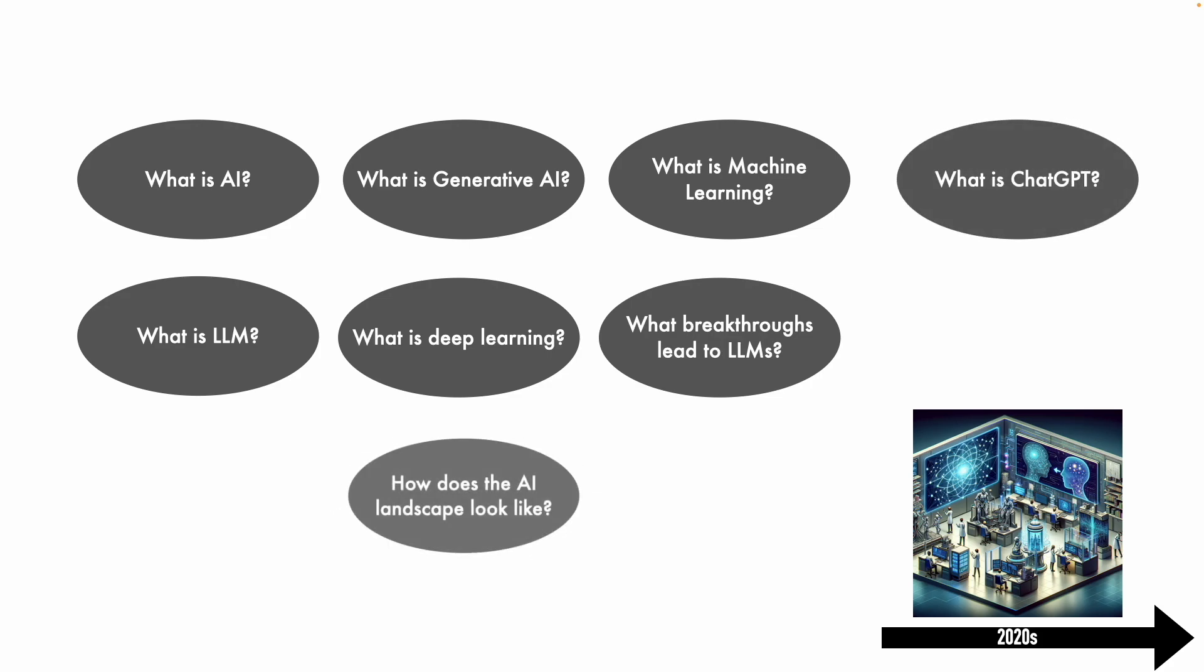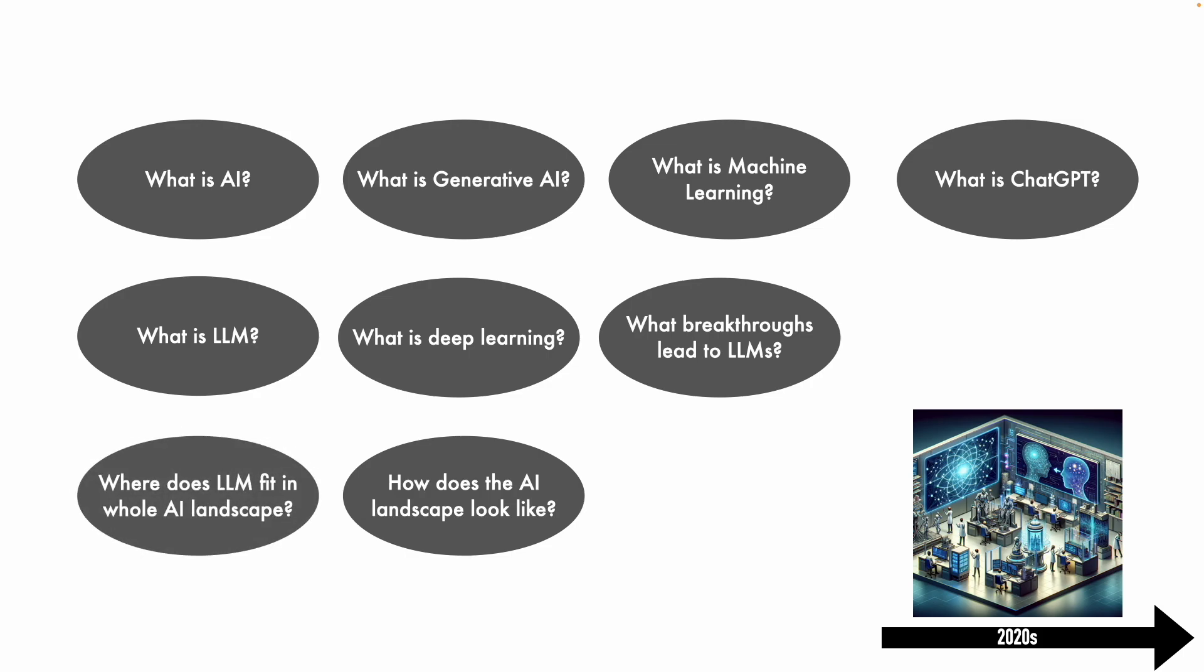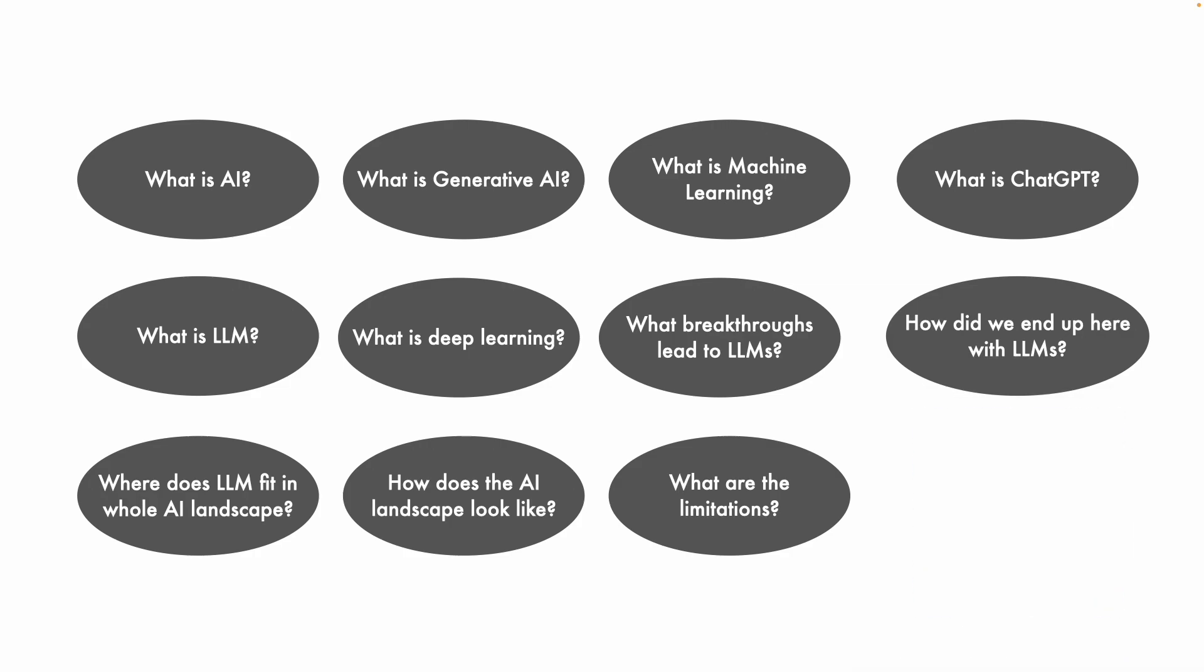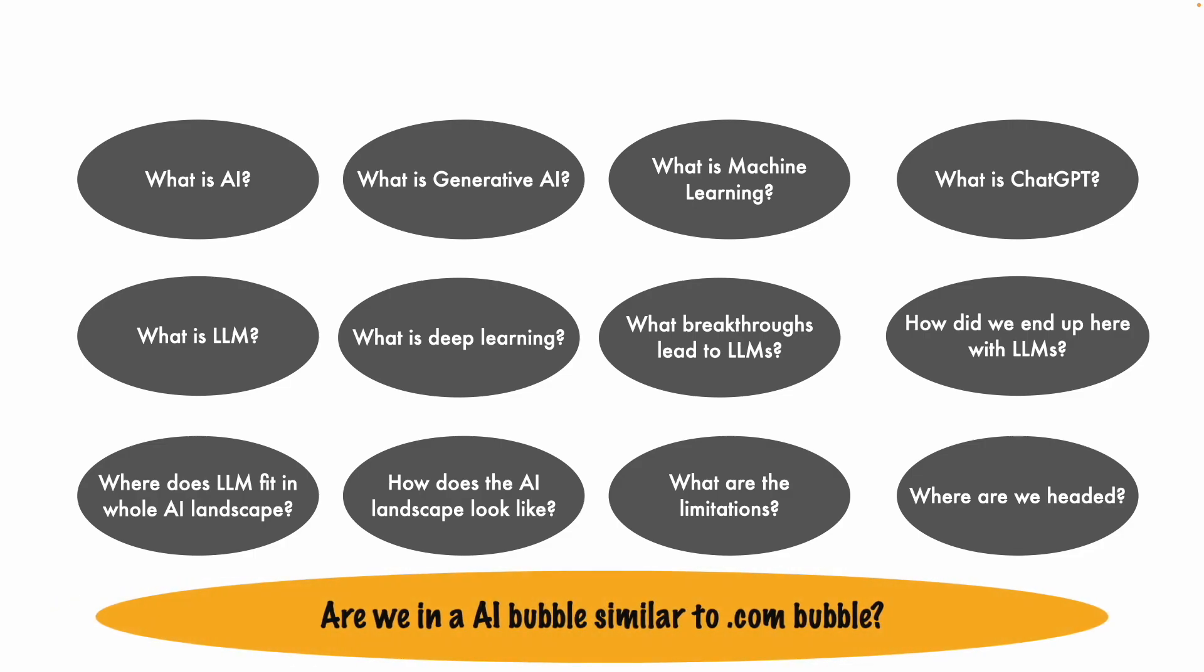How does the AI landscape actually look like? Where does LLM fit in the whole AI landscape and how did we even end up here with the LLMs? Are there any limitations to the LLMs or for that matter AI? And last but not the least, where are we headed? And then probably most of us are thinking, are we in an AI bubble similar to a dot-com bubble that happened a few decades back? Well, these are all very legitimate questions.